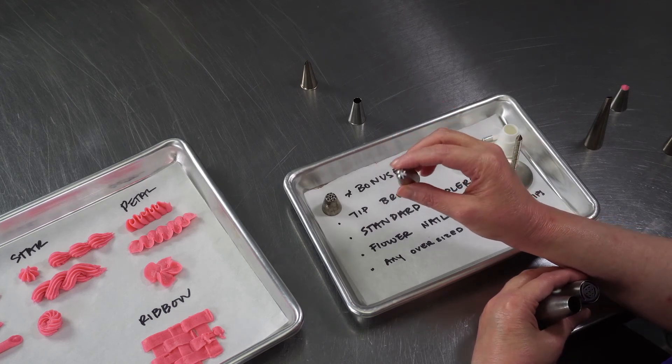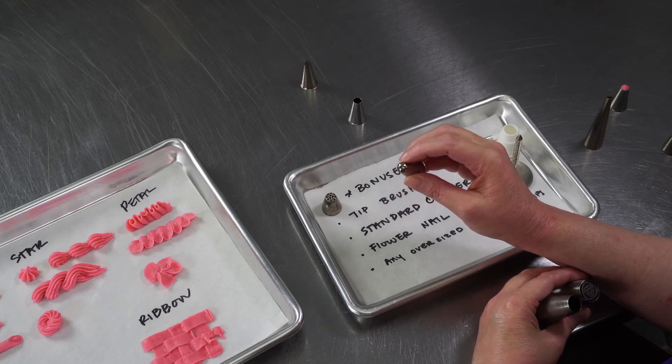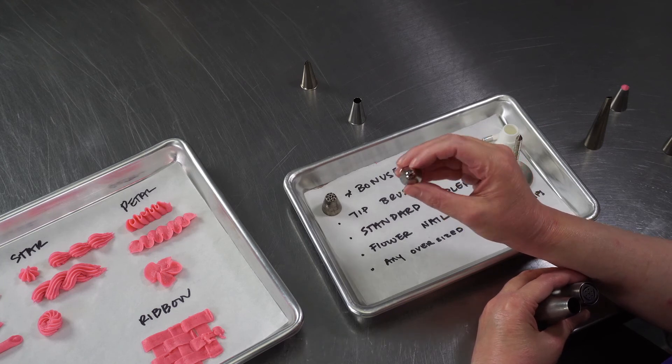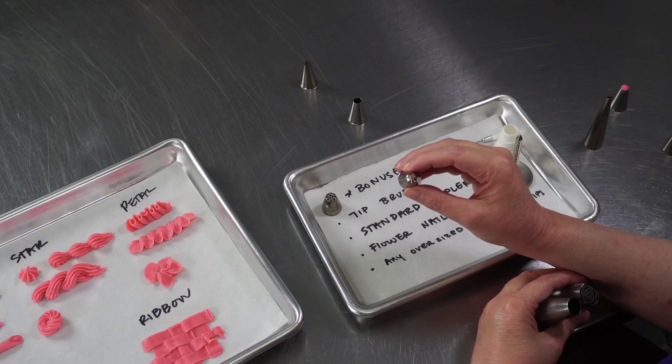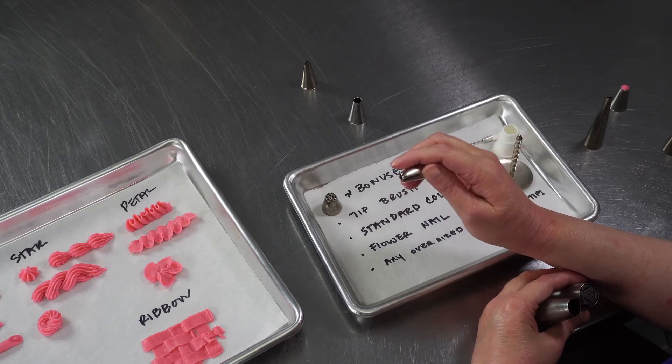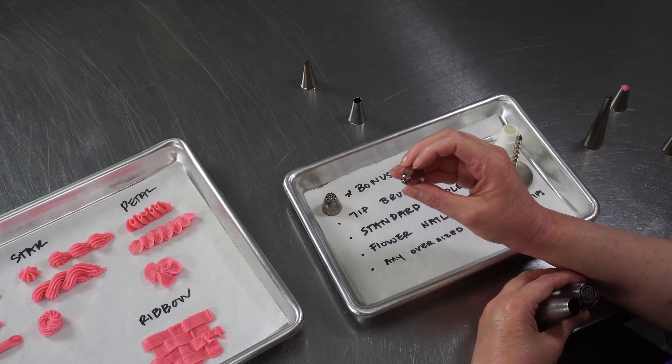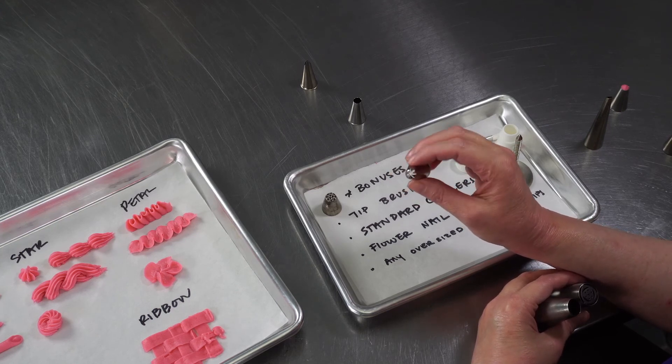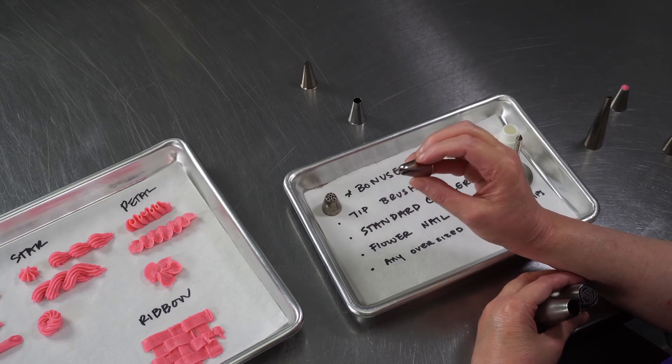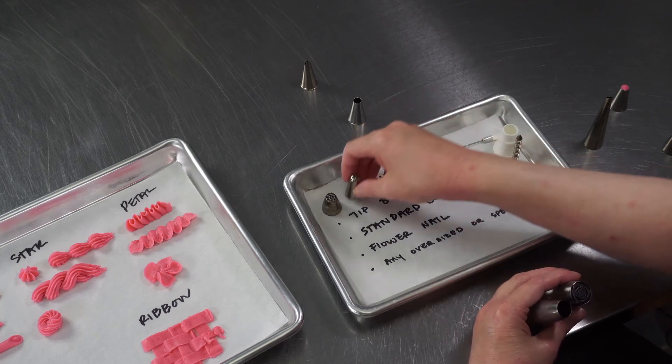And then there's things like flower tips. These have openings similar to a star tip with the exception that you can see all the points are curved towards the center. So when you pipe, it'll give you petals that you have to pipe and twist at the same time. You can literally just pipe a flower with one squeeze. So those are really nice too. They'll help you play around with control and help you work on your piping skills, in addition to being a fast way to effectively pipe some flowers really quickly.